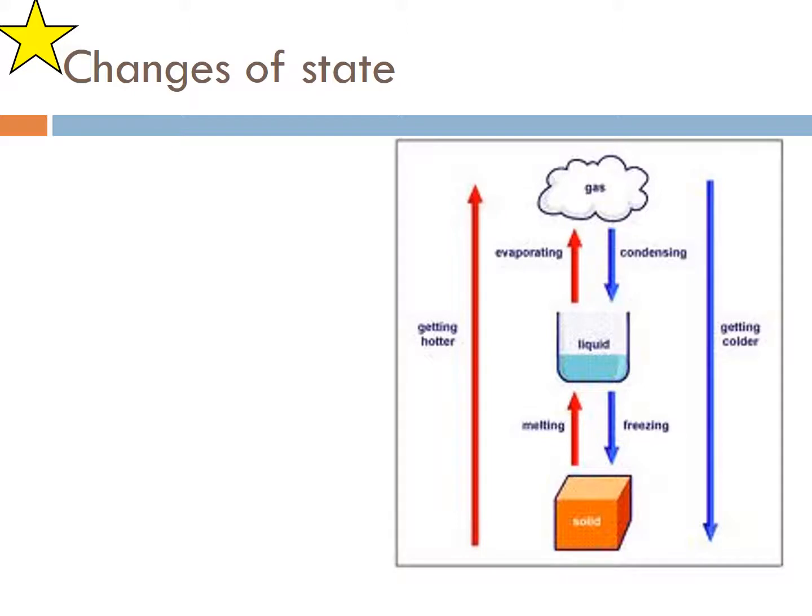Changes of state: if you were to add energy so it gets hotter, you go from solid through melting phase to liquid, goes through melting and then liquid phase and evaporation to gas. If you get colder, meaning you remove energy, that's what refrigerators do, they remove energy with coldness, it goes from gas to condense to liquid and then it freezes into solid.